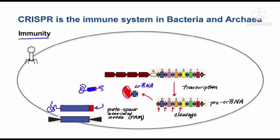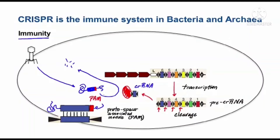Now, what happens this time if the phage tries to infect the same bacterial cell? It injects its DNA into the cell, but this time the CRISPR-Cas system takes that DNA and chews it up. The CRISPR RNA base pairs with the phage DNA. If the phage DNA has a sequence called PAM — which stands for protospacer-associated module — then the CRISPR system will chew up the DNA.